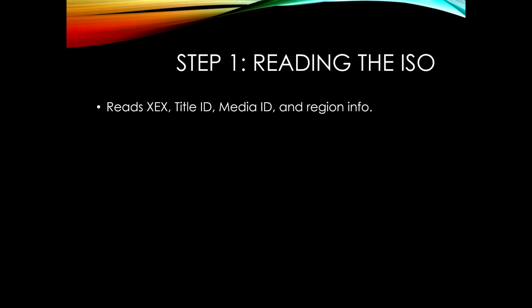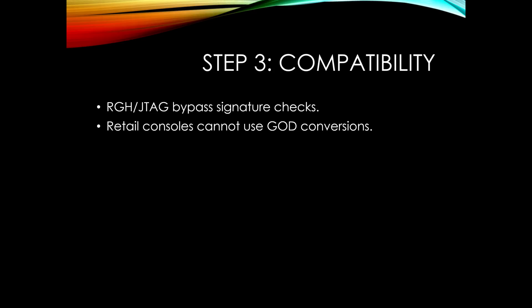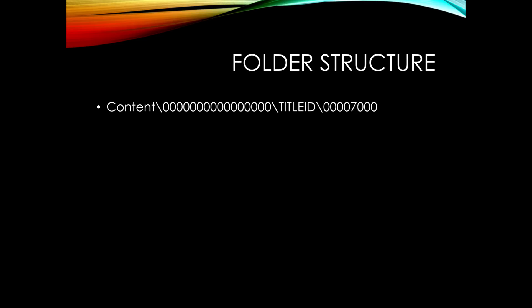The next step is that it splits the game data into optimized chunks instead of thousands of loose files. It packages down the files extracted from the ISO, and by doing so it allows a modded console — your RGH or your JTAG — to bypass signature checks and allow the game to actually launch. A retail console would not be able to do this because it won't allow the game to be launched, but a modded console basically bypasses all the signature checks.